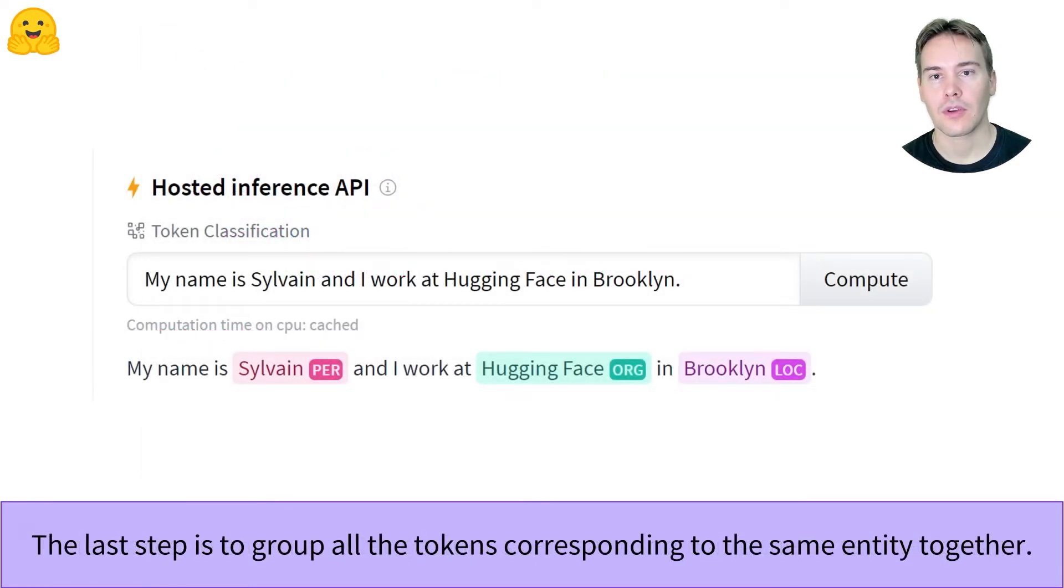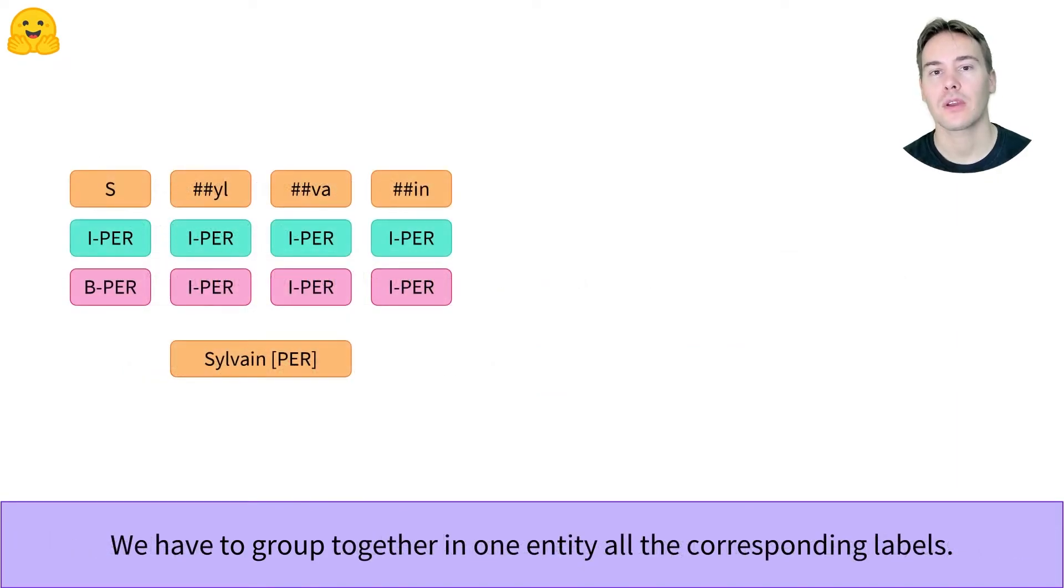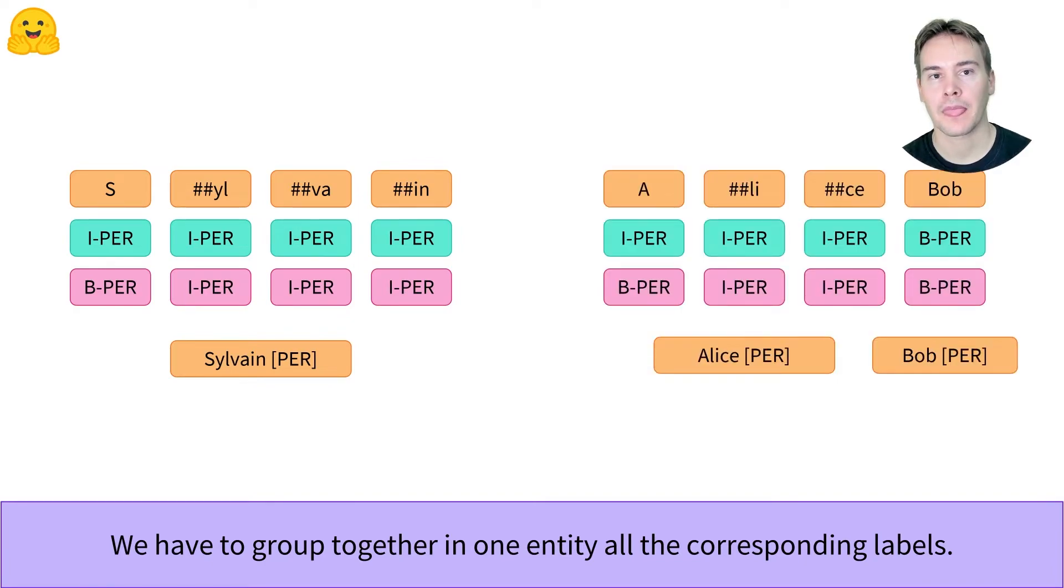The last step is to group together tokens that correspond to the same entity. This is why we have two labels for each type of entity, I-PER and B-PER for instance. It allows us to know if a token is in the same entity as the previous one. Note that there are two ways of labeling used for token classification.